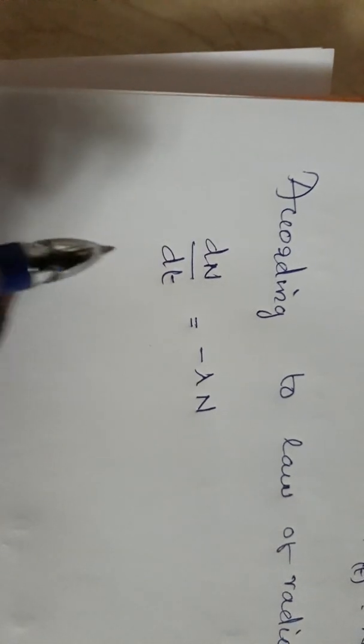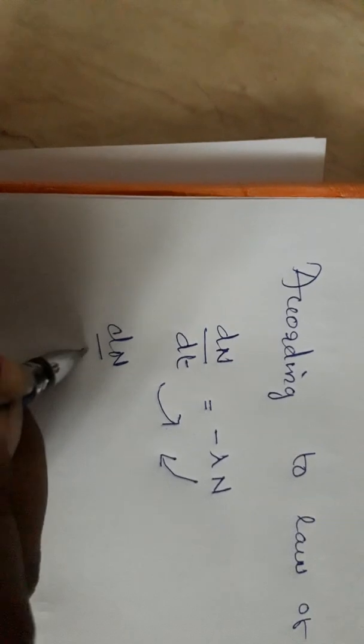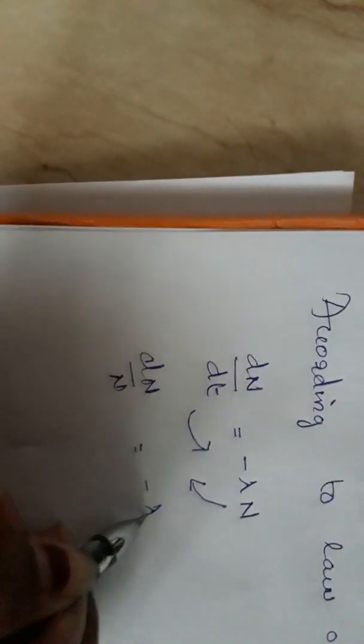I will try to solve this equation. And N is equal to N, so dn/n is equal to minus lambda dt. If we solve this equation, the integral of dn/n gives ln N, then it is equal to... sorry, dt.